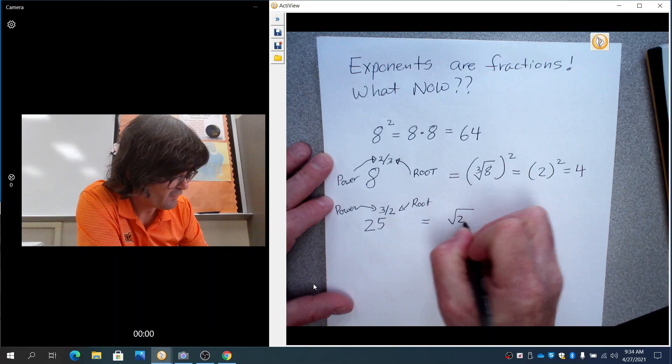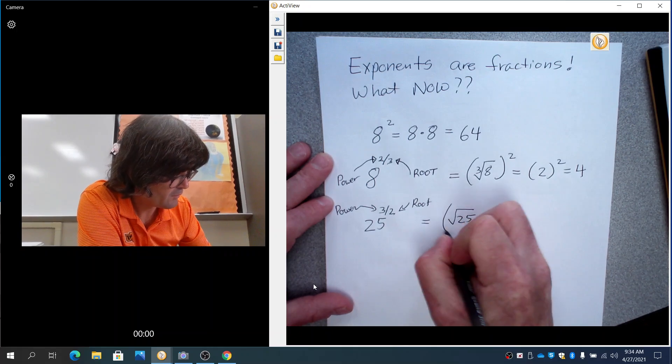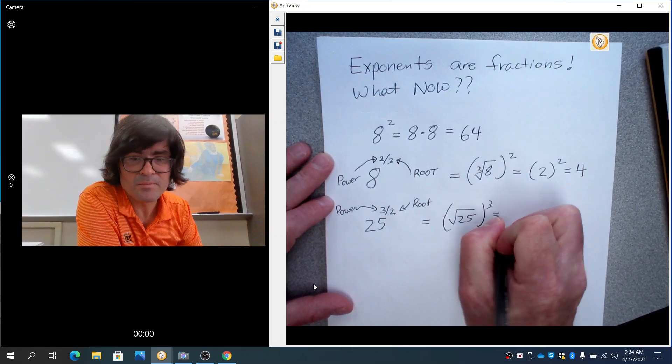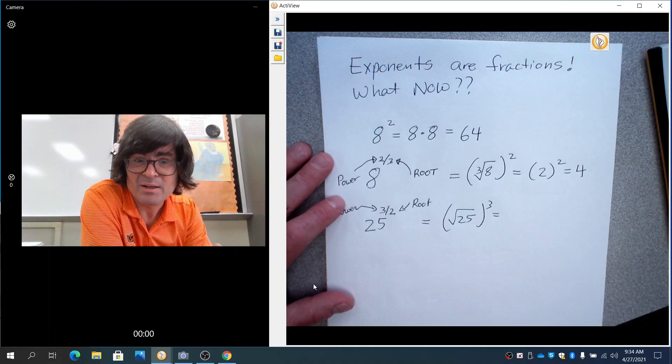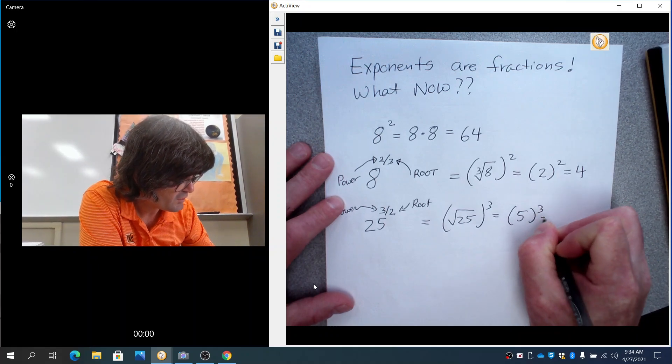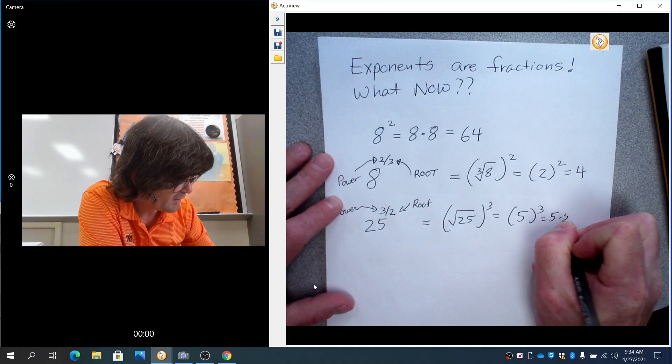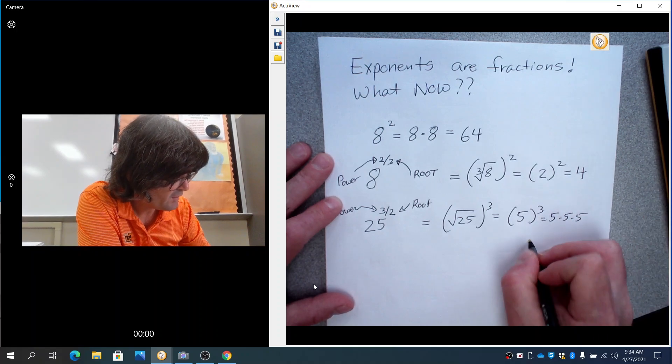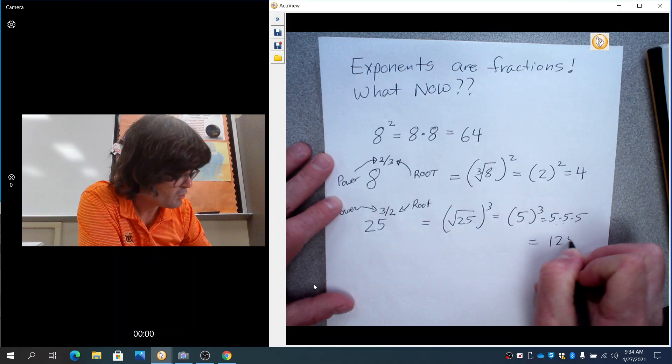So the root is going to be the square root of 25, and that's going to be cubed. And the square root of 25 is 5 because 5 times 5 makes 25. So this is really going to be 5 cubed, which is 5 times 5 times 5, and that's 25 times 5 makes 125.